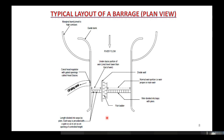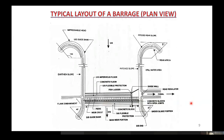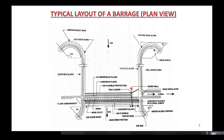Here is a more detailed layout of the barrage showing the same components. The direction of flow of water is indicated, and this is the right bank guide bank. The guide banks start in a hockey shape. The cross-section of the guide banks is trapezoidal — a multi-layer trapezoidal cross-section. Here is the divide wall and this is the main canal.